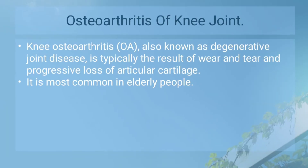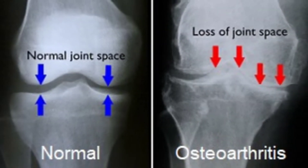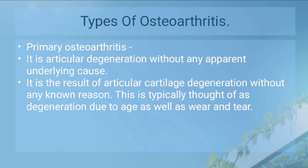What is osteoarthritis of the knee joint? Knee osteoarthritis, also known as degenerative joint disease, is typically the result of wear and tear and progressive loss of articular cartilage. It is commonly seen in elderly people and is divided into two types: primary osteoarthritis and secondary osteoarthritis.